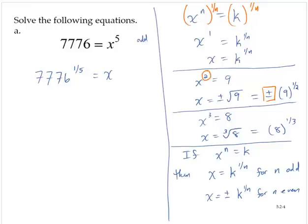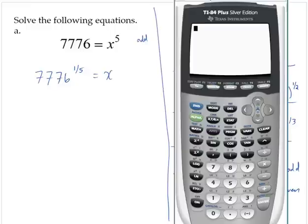We use a calculator to evaluate that. 7,776 exponent. Now be careful here. Because our exponent is a fraction, we have to put the whole fraction in the exponent. And so we do that by using parentheses. So 7,776 carat open quantity 1 divided by 5 close quantity. Hit Enter. And x is 6.